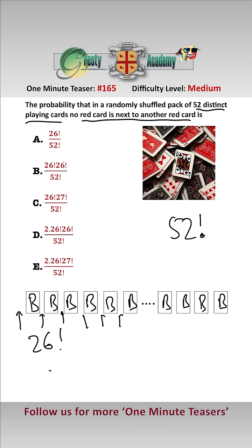So we have 27 possibilities for the first red card, 26 possibilities for the second, 25 for the third, down to two possibilities for the last one. And so that is 26 factorial times 27 factorial.